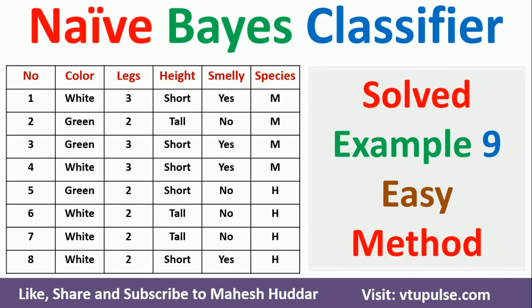Welcome back. In this video, I will discuss how we can apply a Naive Bayes classifier to a given dataset to classify a new example into one of the classes. This is solved example number line. The link for other examples is given in the description below.